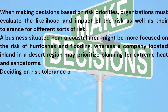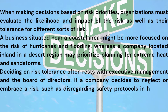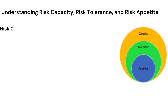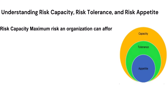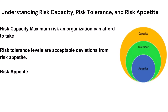Deciding on risk tolerance often rests with executive management and the board of directors. If a company decides to neglect or embrace a risk, such as disregarding safety protocols for hazardous materials, it can lead to significant legal and financial liability. Risk capacity is the maximum risk an organization can afford to take; risk tolerance refers to acceptable deviations from risk appetite; and risk appetite is the amount of risk an organization is willing to take.